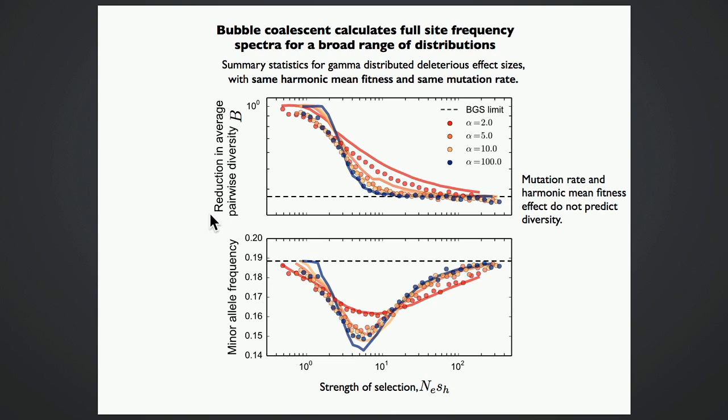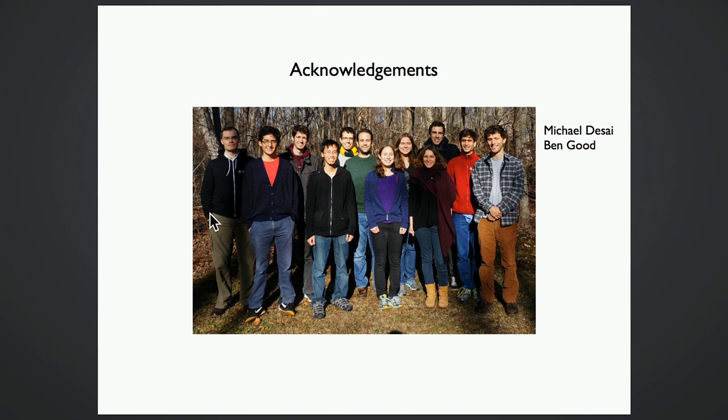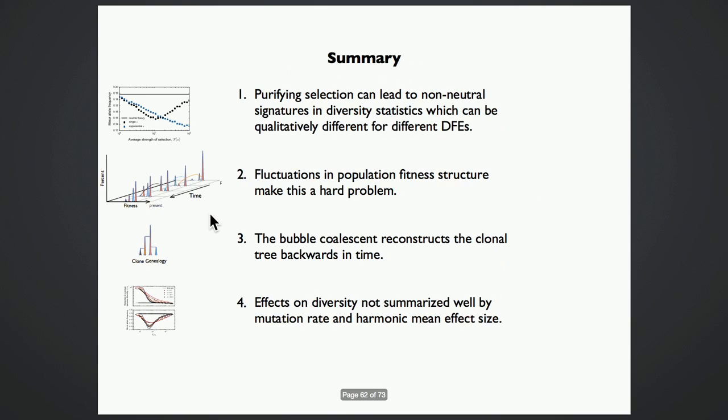We can also look at how the bubble coalescent does on the same plot. And we see that it does actually capture most of the deviations from the background selection limit. It struggles a little bit at weak fitnesses, but this is something that we're currently working on. And so I would like to end by thanking my advisor, Michael, and Ben Good, who is another graduate student in the lab who I've collaborated with, and I'll take any questions.